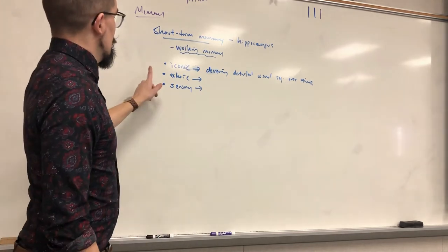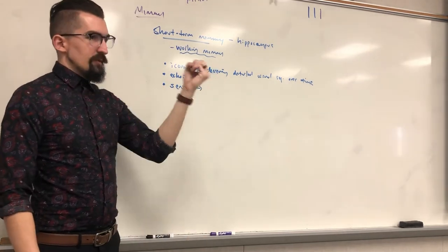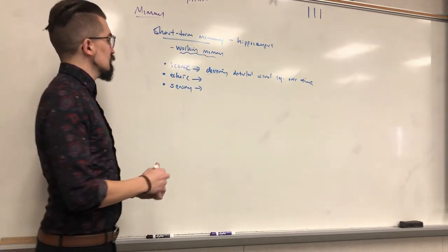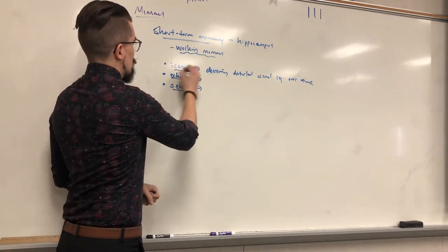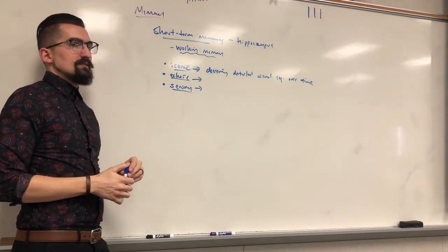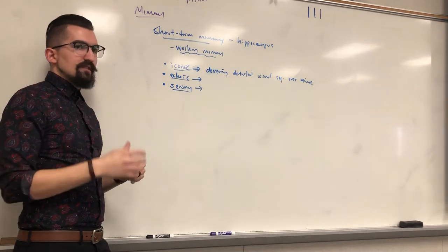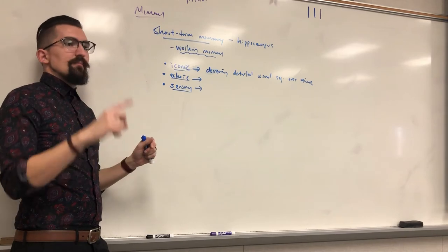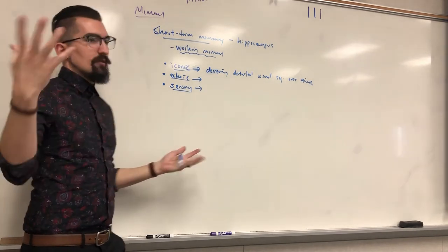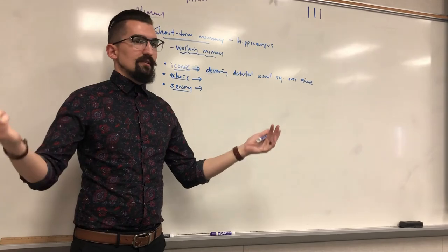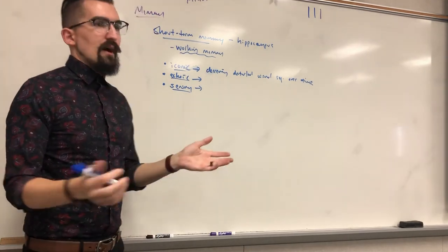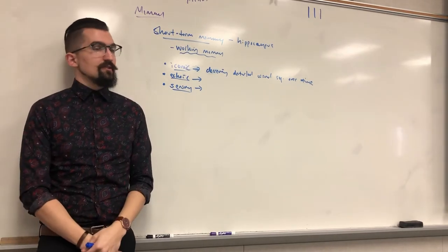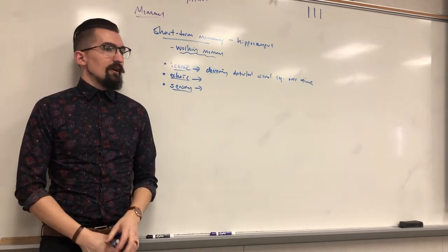Echoic memory is the auditory equivalent — when you hear something it lingers briefly like an echo in your brain for a few seconds before fading. For example, if someone tells you their name and you weren't paying full attention, for a moment you can still 'hear' it in short-term memory before it disappears. It's called echoic because it's like listening to an echo — the sound briefly persists after the stimulus is gone.